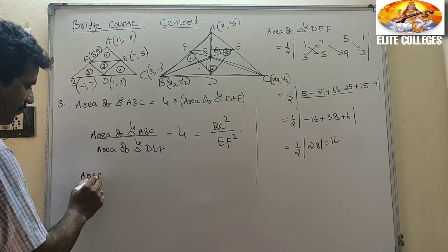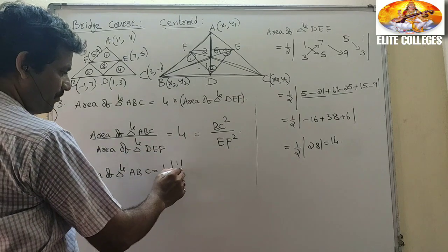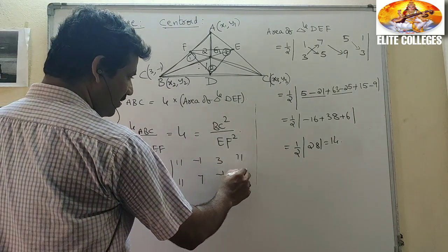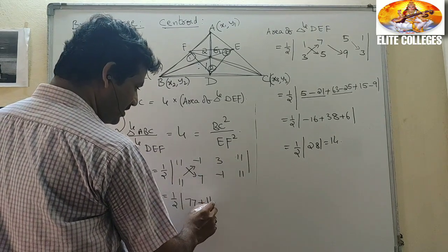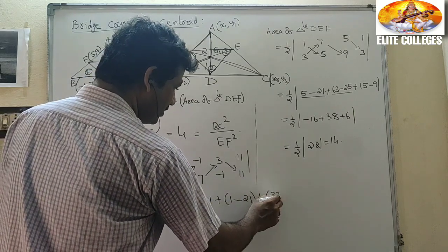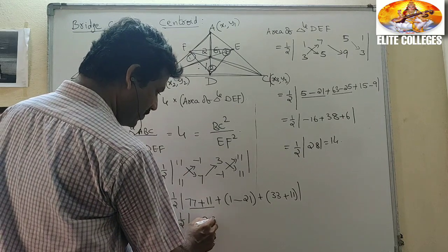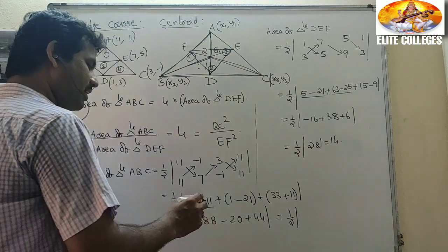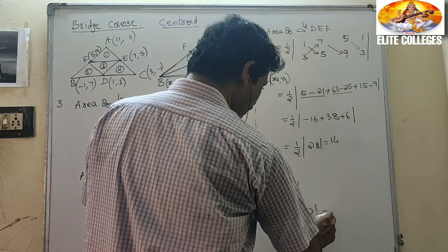Now what is the area of triangle ABC? Area of triangle ABC equals ½ |mod|. With points A(11,11), B(-1,7), C(3,-1): = ½ |11×7 - (-1)×11 + (-1)×(-1) - 7×3 + 3×11 - (-1)×11| = ½ |77 + 11 + 1 - 21 + 33 + 11 - 20| = ½ |112| = 56.